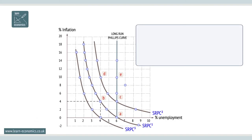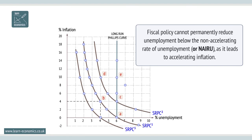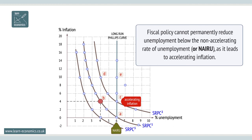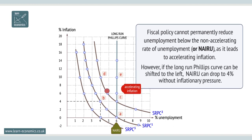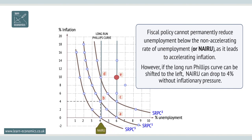Fiscal policy cannot permanently reduce unemployment below the non-accelerating rate of unemployment, or NARU for short, as it leads to accelerating inflation. For example, if NARU is at 6%, point A, a fiscal stimulus will simply result in a short-term reduction in unemployment to 4%, point B. However, if the long-run Phillips curve is shifted to the left through supply-side policy, NARU can drop to 4% without inflationary pressure.